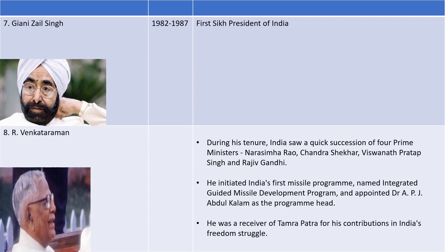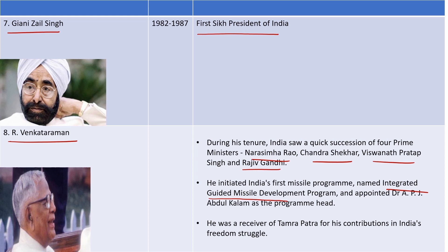R. Venkataraman was a President of India who worked with four prime ministers: Narasimha Rao, Chandrasekhar, Vishwanath Pratap Singh, and Rajiv Gandhi. He was also the head of the Integrated Guided Missile Development Program and received the Bharat Ratna award.